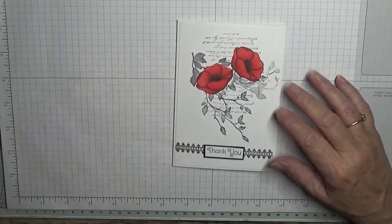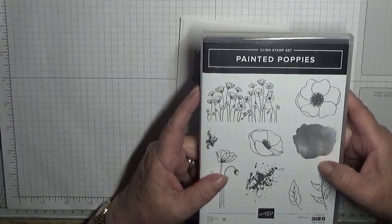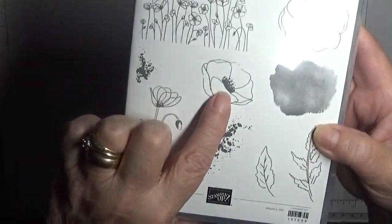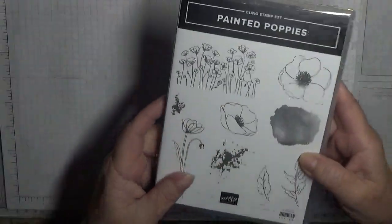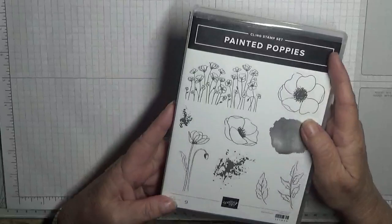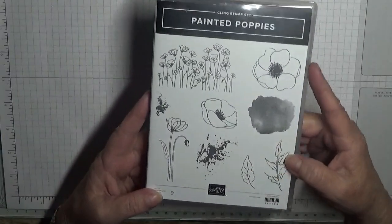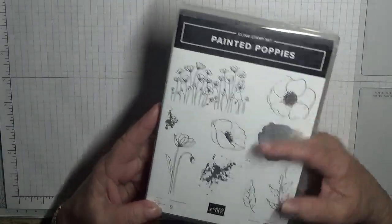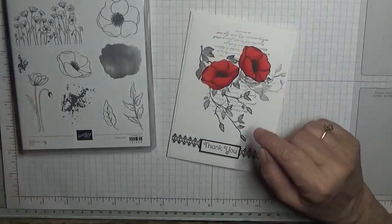To make this card I use the stamp sets painted poppies and I just use the small poppy flower. This is available as of the 3rd of January in the spring and summer catalogue. I've got some lovely stamps in there.